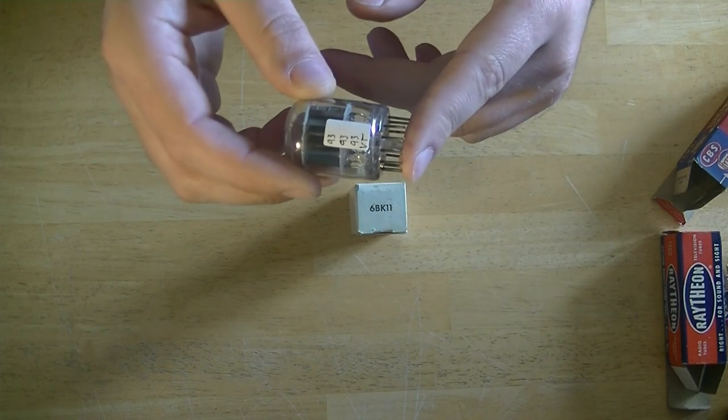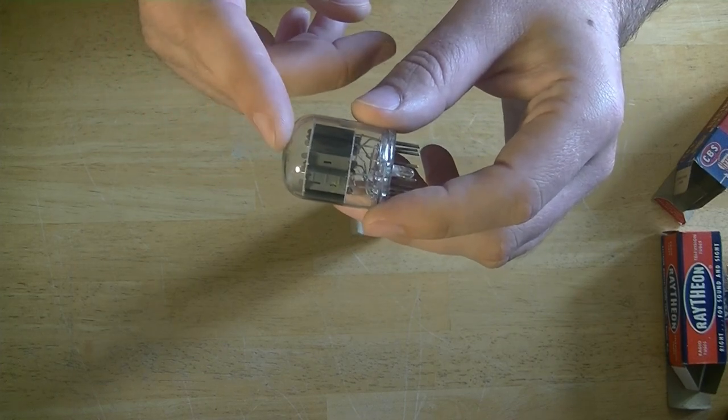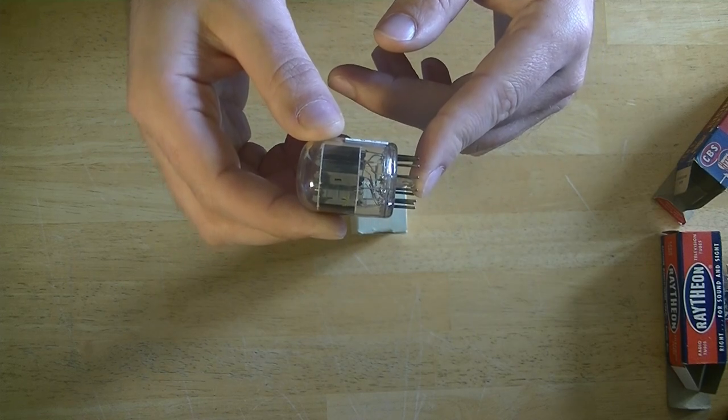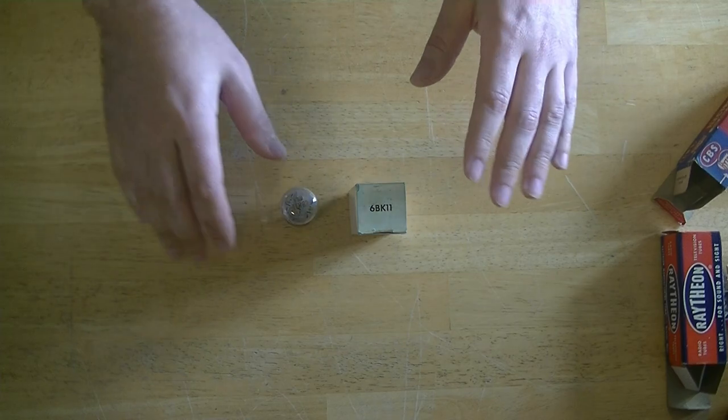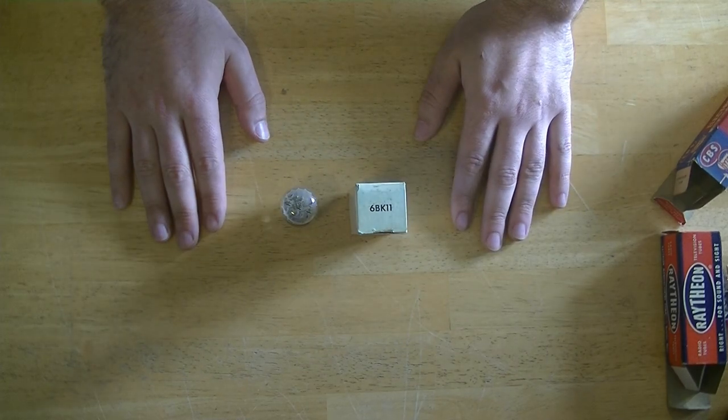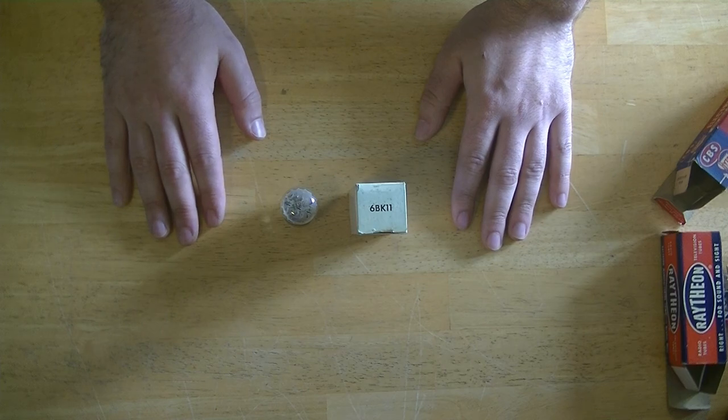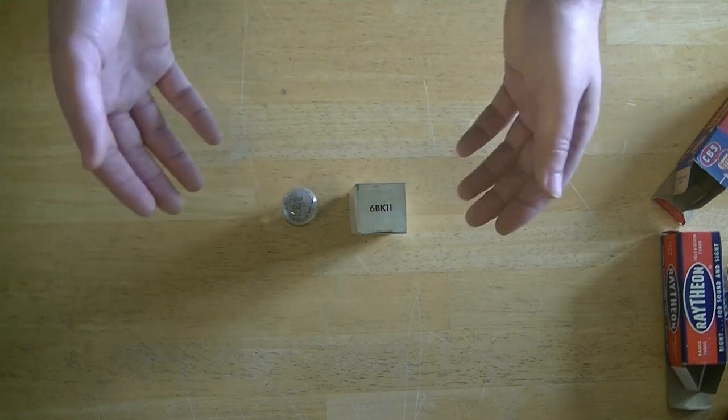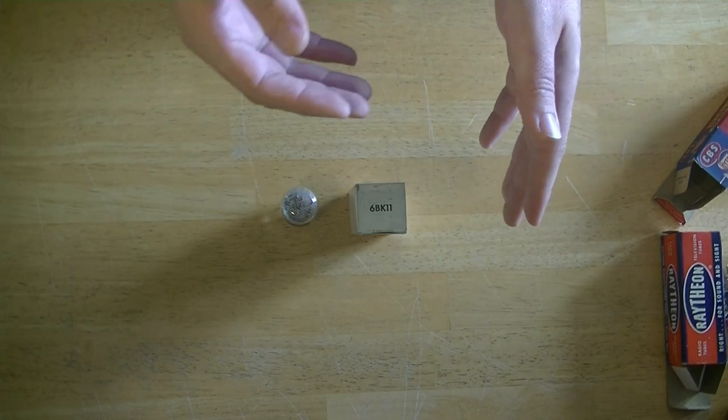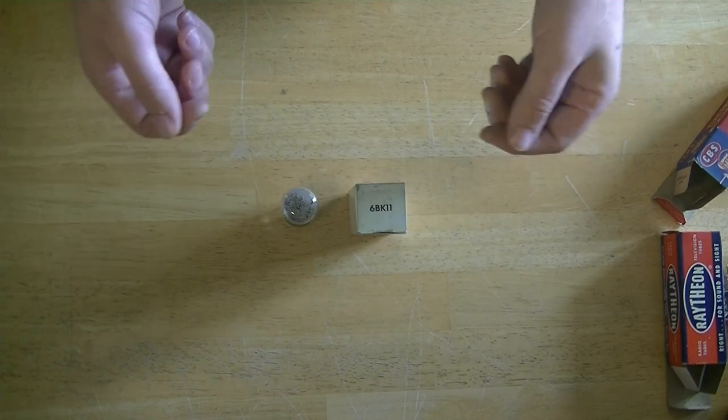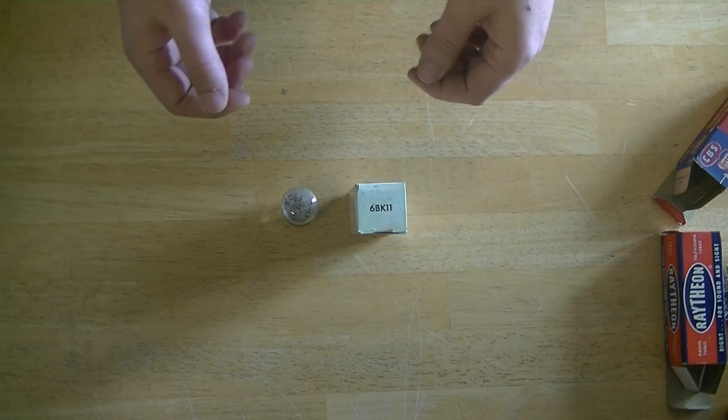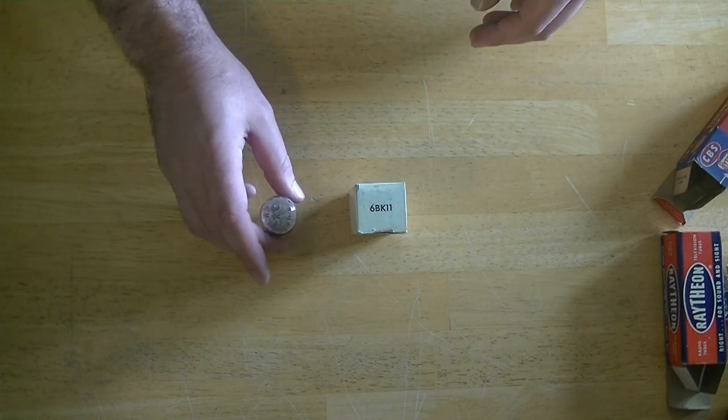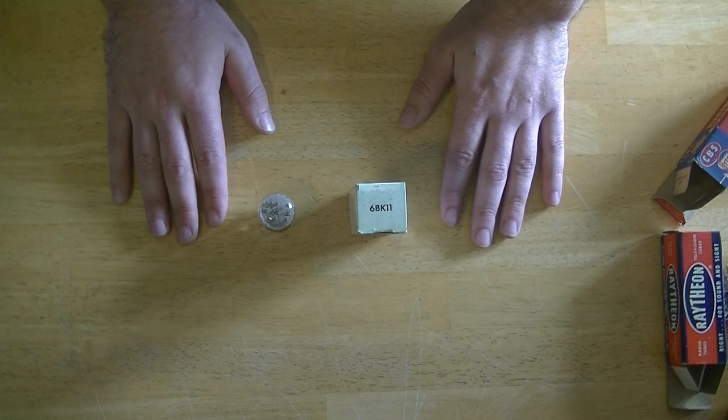This particular tube is actually a 12AX7 with one half of a 12AT7 inside of it. And Ampeg, in the 1960s, used these tubes as preamps in their Jet line of guitar amplifiers. The problem is, is that these were very low production, and it's almost impossible to find them used and new today. If you look online, you're going to find forums full of people asking where they can find these, or if there is a possible replacement. There are some similar tubes, but they don't perform the same.